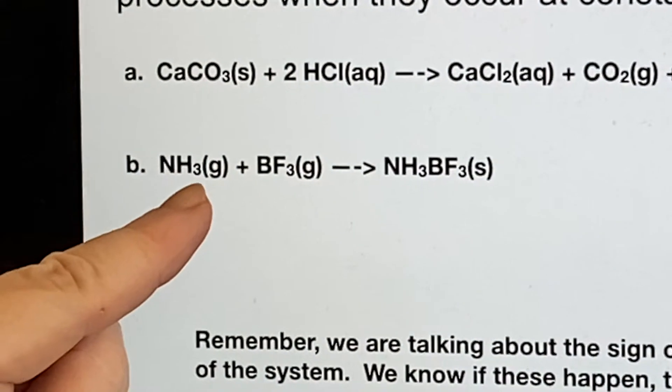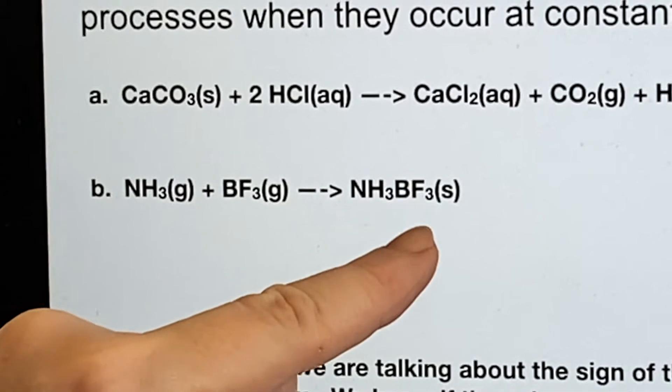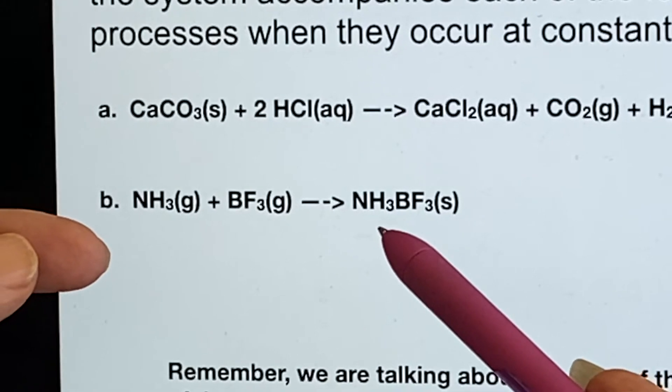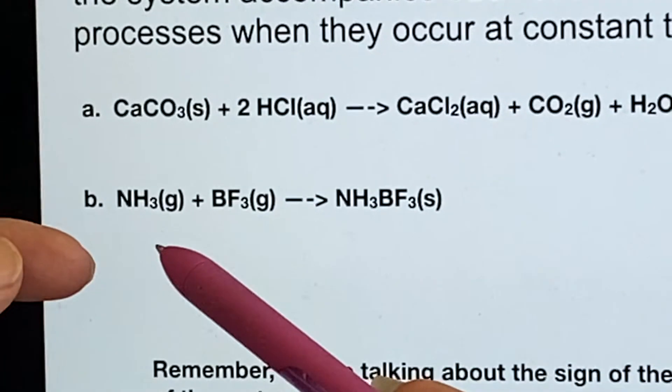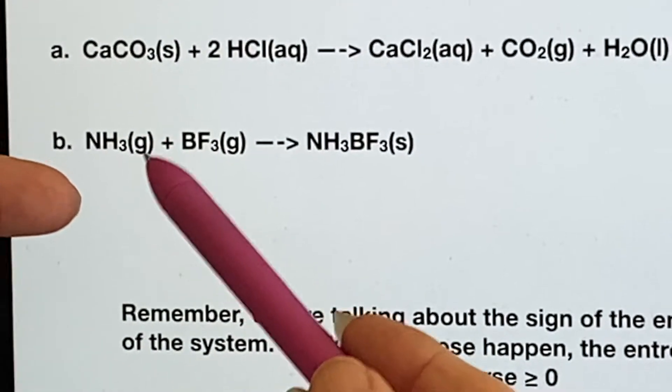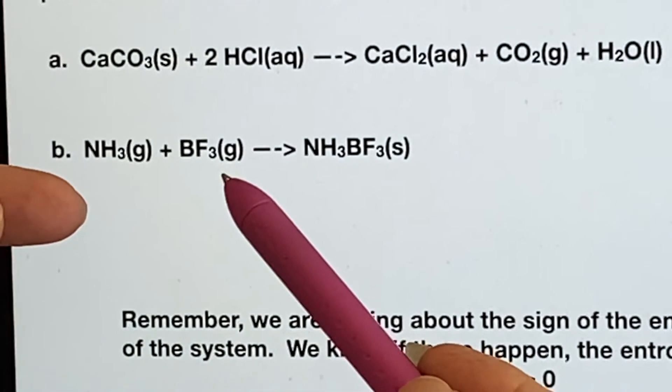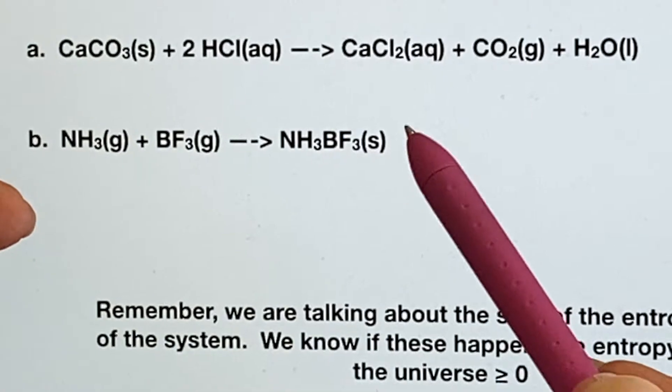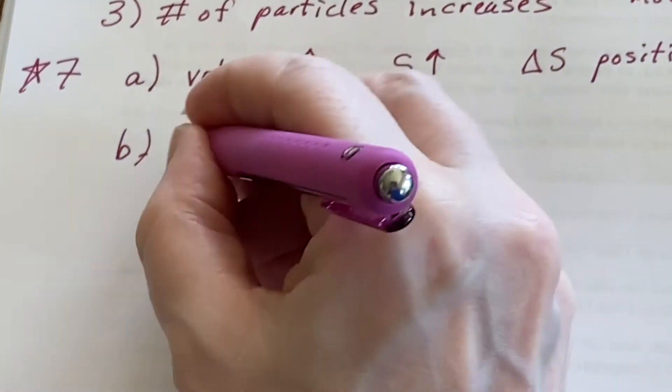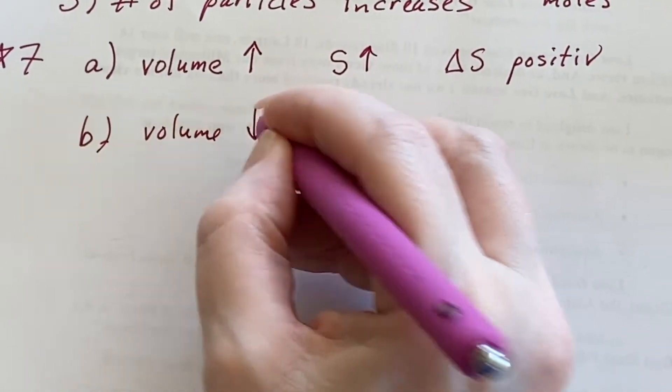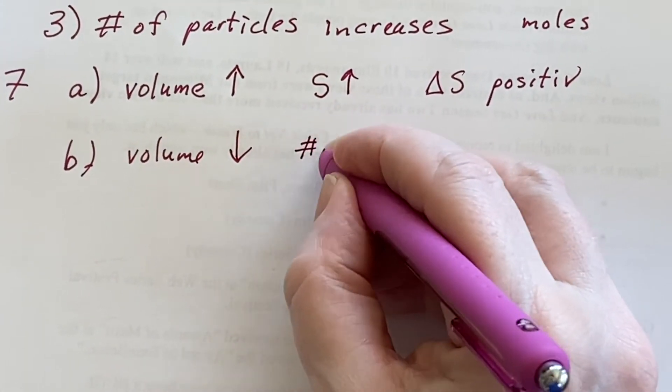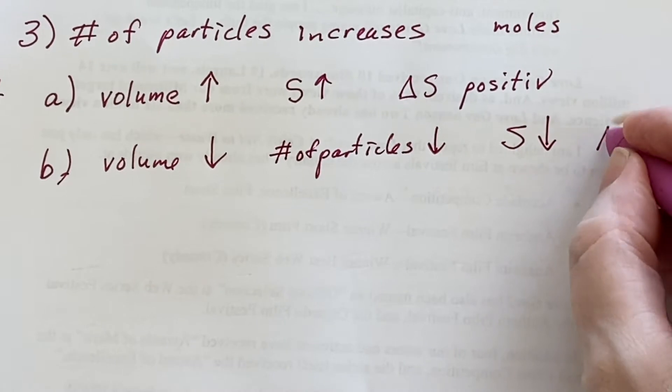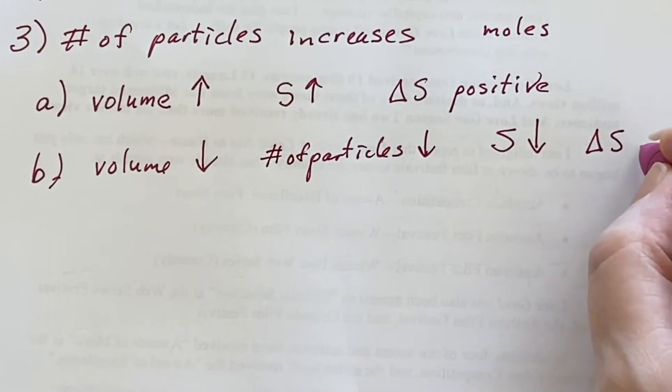For B, we have a gas and another gas becoming a solid. So I have two items becoming just one item. So as far as number of particles, it's going down. But I also, more importantly, have the fact that we have two gases, which have lots of entropy, reverting back to something that is just a solid, which has very little entropy. So for this one, the volume is going way down because I went from a gas to a solid. And I can also say the number of particles went down. Both of these are telling me entropy is going down and that will make delta S negative.